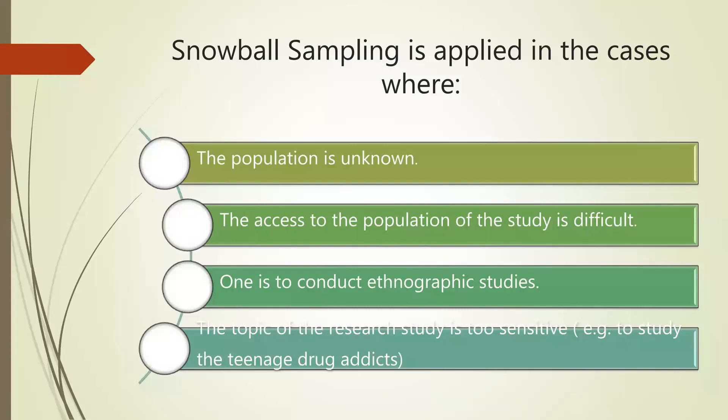Snowball sampling is applied in cases where the population is unknown and access to the population is difficult. For example, studying teenagers who are drug addicts, or researching extramarital affairs — no one will tell you because it is sensitive. If you want to conduct ethnographic studies or study a particular population like tribes, the sample will be less and access is difficult. Snowball sampling is used when the topic of research is too sensitive.